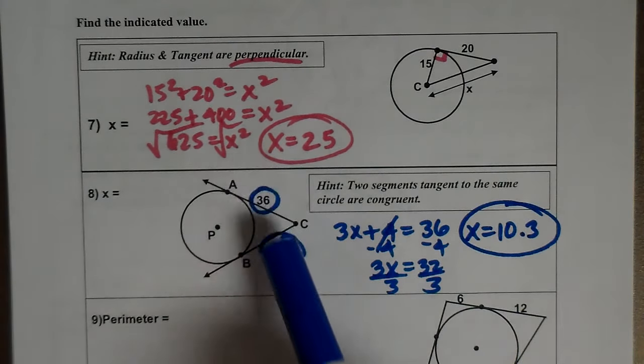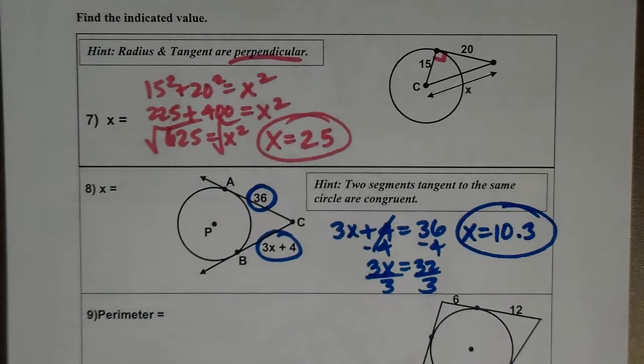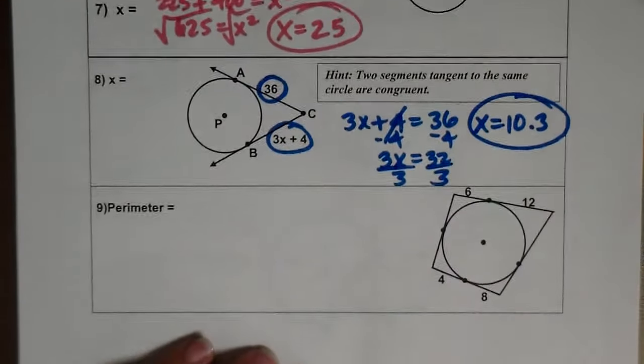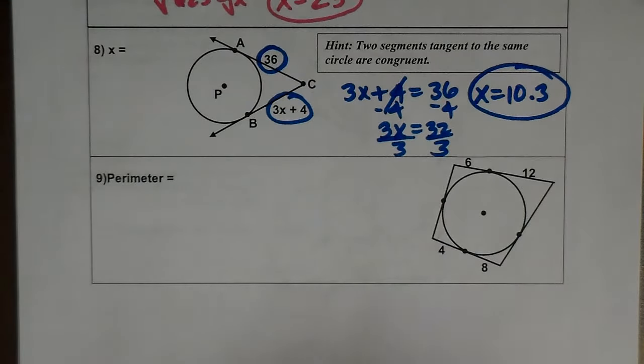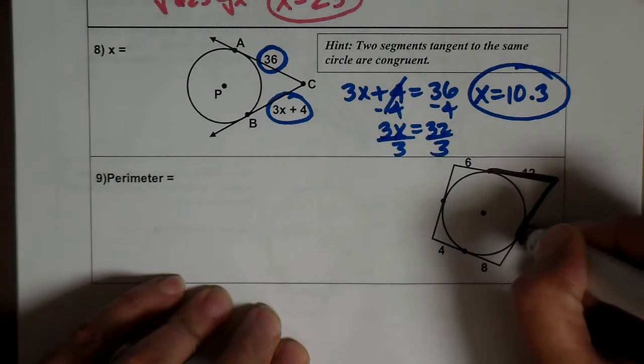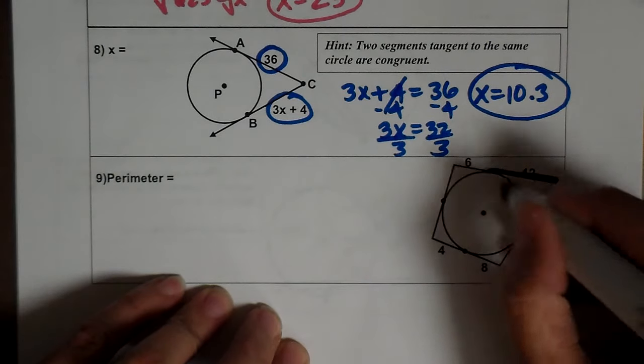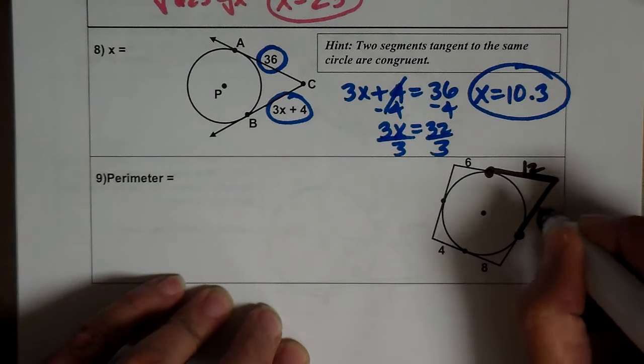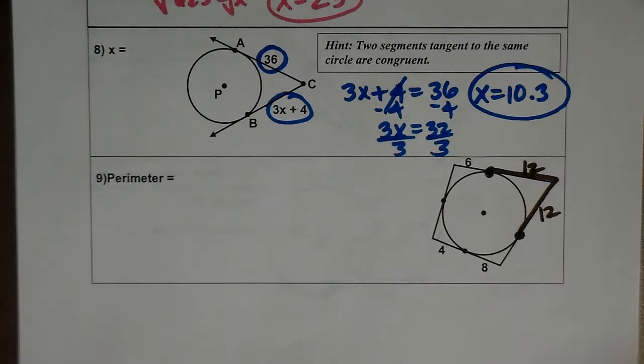So anytime you have two tangents, two segments that are tangent, they're congruent. Okay, let's look at this next one. Here's the same idea with the tangents. This tangent and this tangent are the same tangent to the same circle. So if this is 12, that's 12.